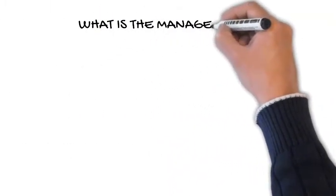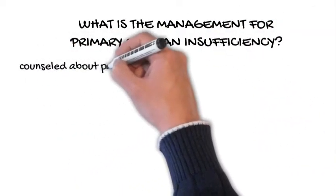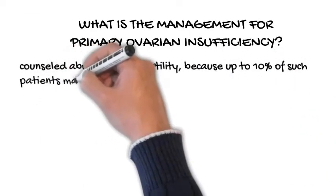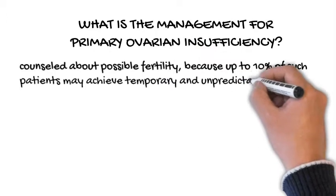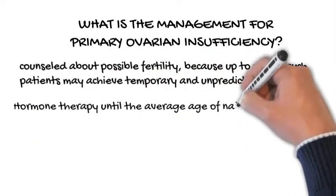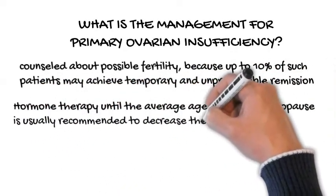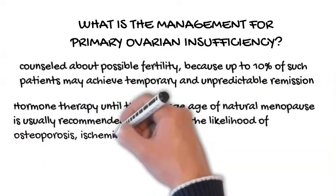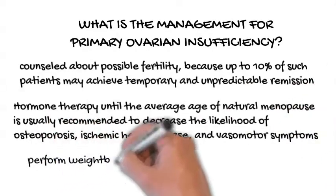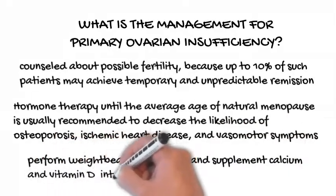What is the management for primary ovarian insufficiency? Patients with primary ovarian insufficiency should be counseled about possible fertility, because up to 10% of such patients may achieve temporary and unpredictable remission. Hormone therapy until the average age of natural menopause is usually recommended to decrease the likelihood of osteoporosis, ischemic heart disease, and vasomotor symptoms. For optimal bone health, patients should be advised to perform weight-bearing exercises and supplement calcium and vitamin D intake.